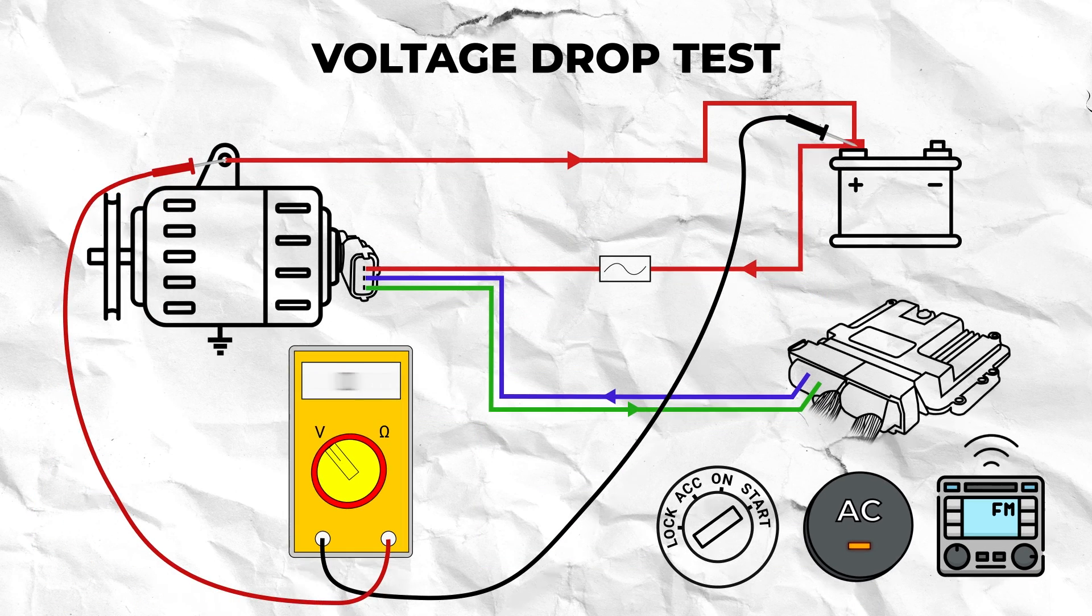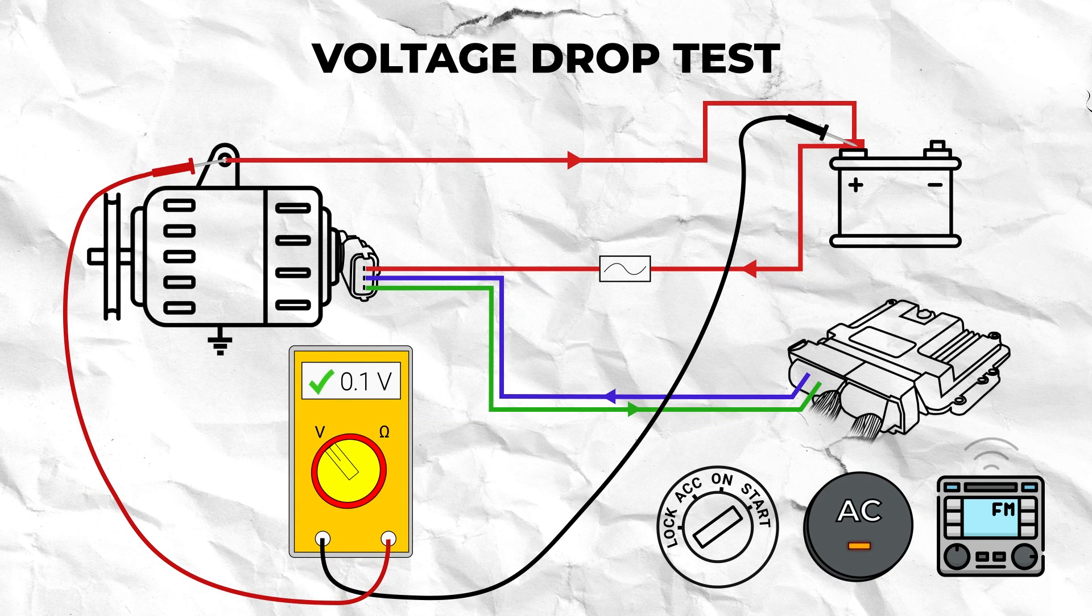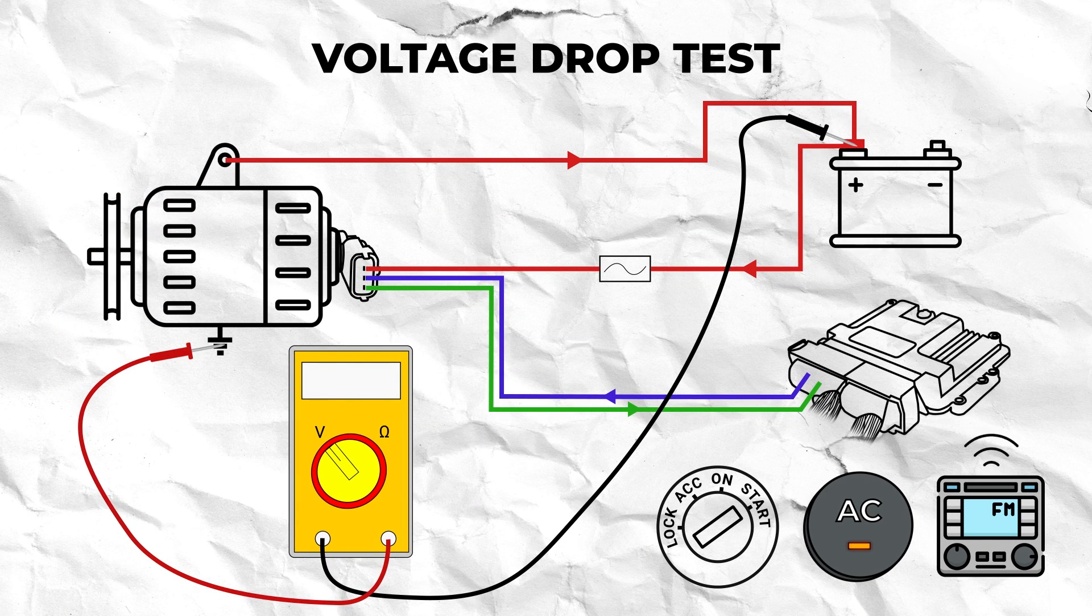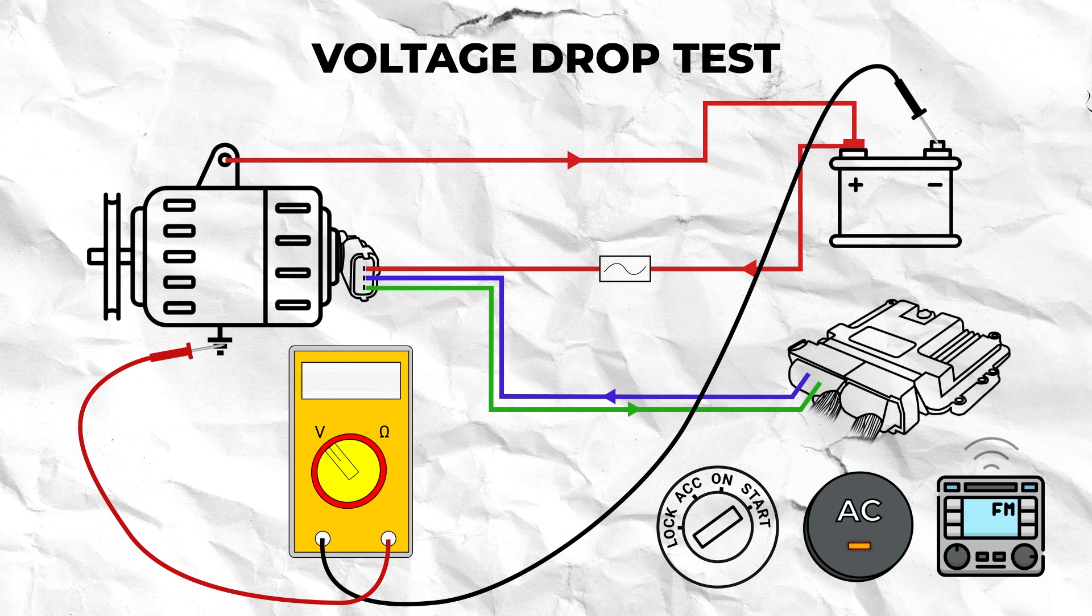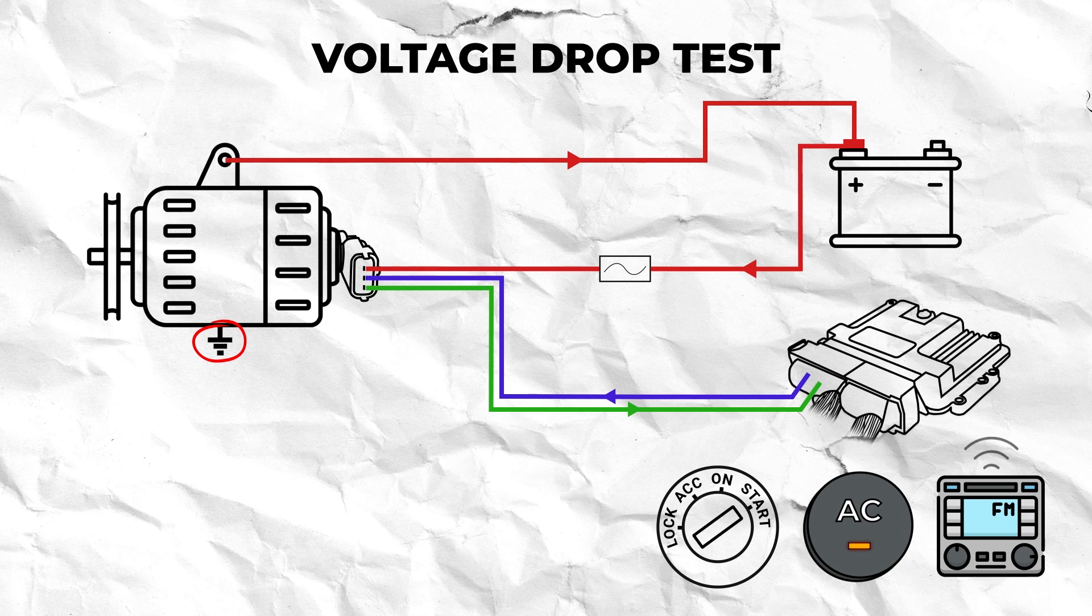If your voltage drop test showed less than 0.2 volts then conduct the same test but from the alternator ground to the battery negative. If the reading is over 0.2 volts then you have a bad ground connection which will need to be traced and rectified.